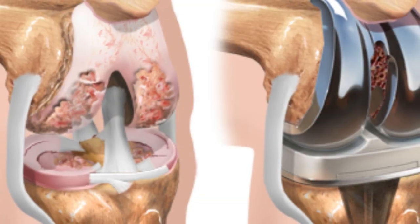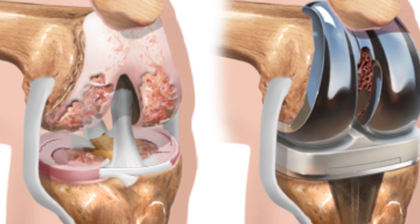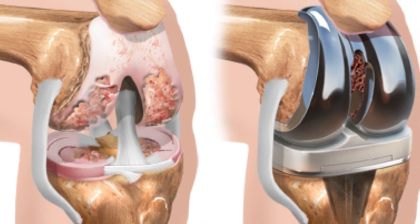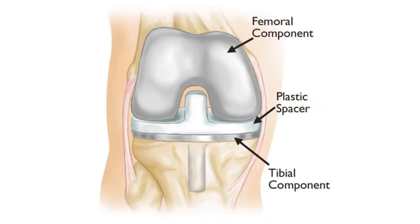Total knee replacement, also known as total knee arthroplasty, is a surgical procedure aimed at addressing widespread arthritis or significant damage affecting multiple compartments of the knee joint. Unlike partial knee replacement, which targets specific compartments, total knee replacement involves replacing the entire knee joint with prosthetic components. This comprehensive approach addresses all three compartments of the knee: the medial, lateral, and patellofemoral components.